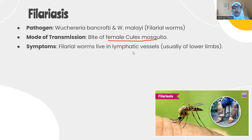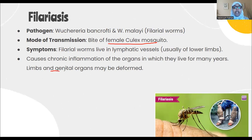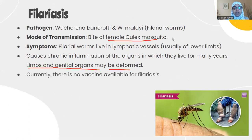Living worms reside in the lymphatic vessels, usually in the lower limbs, leading to thickening and swelling of the organs. This causes chronic inflammation, and limbs and genital organs may become deformed due to the swelling and edema. The disease affects legs, arms, breasts, and scrotum. Currently there is no vaccine for filarial worms. This condition is also known as elephantiasis.